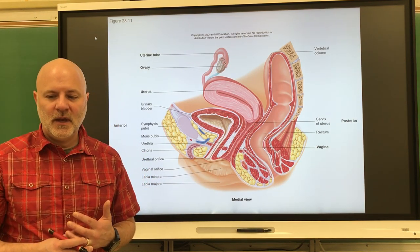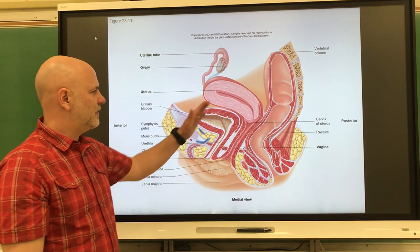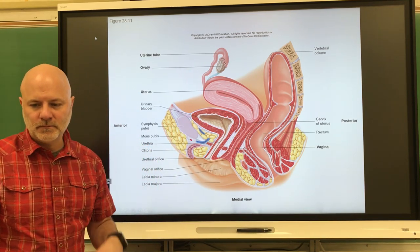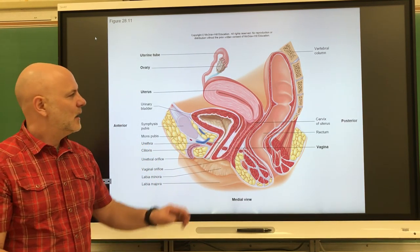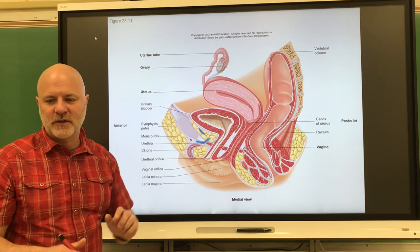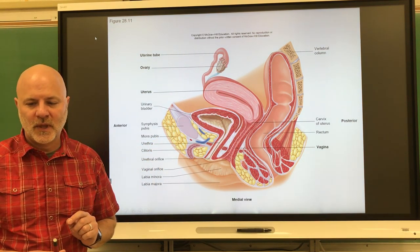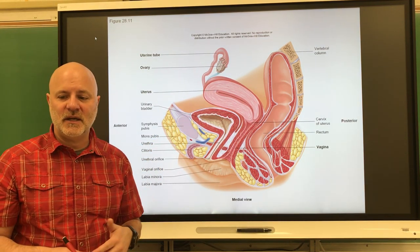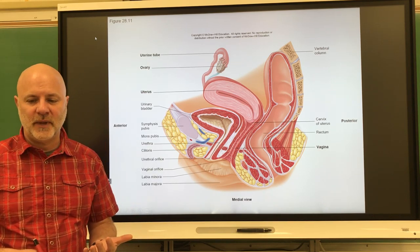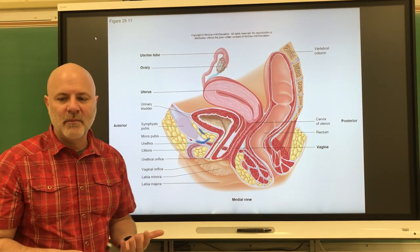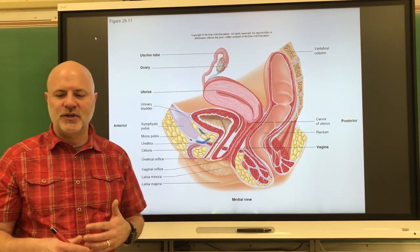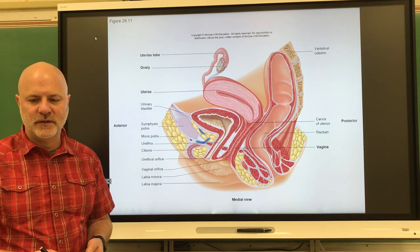With tactile stimulation—that's touch stimulation—and psychological stimulation, this can trigger an orgasm. This can cause the uterus and fallopian tubes to contract rhythmically, and that's going to help transport the sperm to the egg. This is also accompanied by intense pleasure, which is secretion of dopamine, followed by muscular and psychological relaxation caused by oxytocin.